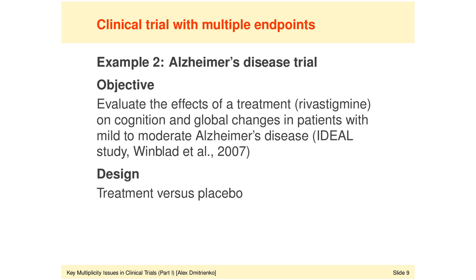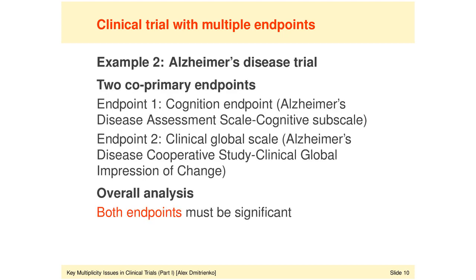As far as the clinical objective is concerned, the trial sponsor would like to evaluate the effects of a treatment on cognition and global changes in patients with mild to moderate Alzheimer's disease. For simplicity, we assume this evaluation is based on a single dose of the experimental treatment compared to placebo. Just like in the prostate cancer trial example, we have two endpoints.